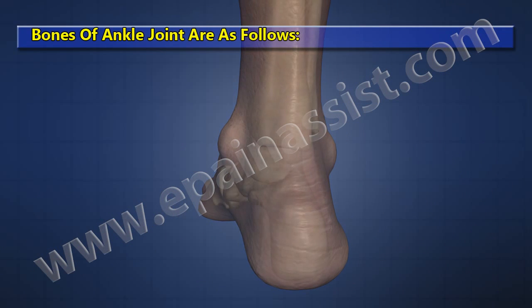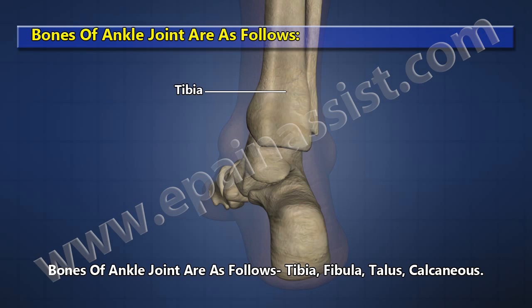Bones of the ankle joint are as follows: tibia, fibula, talus, and calcaneus.